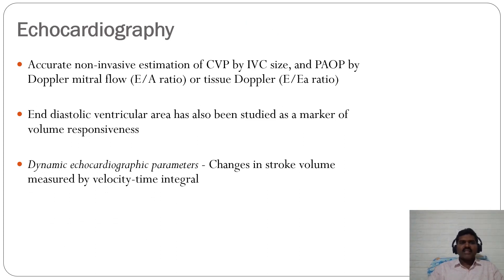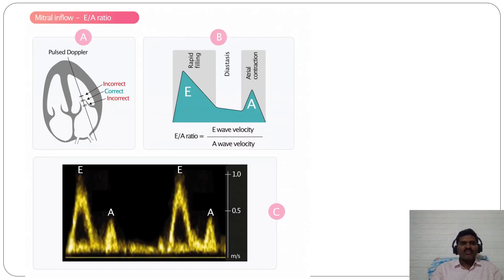Echocardiography provides accurate non-invasive estimation of CVP via IVC size and PAOP via Doppler mitral flow E/A ratio or tissue Doppler E/Ea ratio. End-diastolic ventricular area has been studied as a marker of volume responsiveness. Dynamic echocardiographic parameters such as changes in stroke volume measured by velocity-time integral (VTI) are also used. Using pulsed Doppler at the mitral valve, E-wave velocity (rapid filling phase) and A-wave velocity are measured; the E/A ratio is calculated as E-wave velocity divided by A-wave velocity.